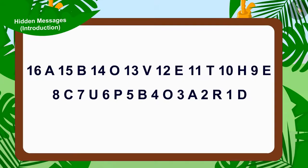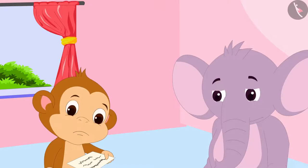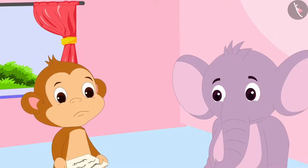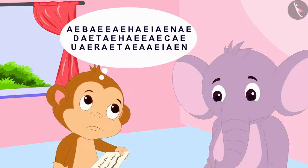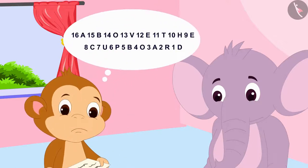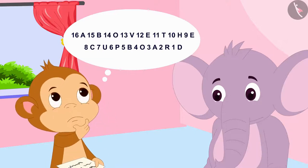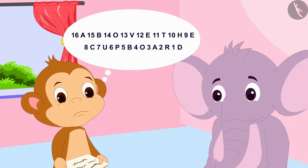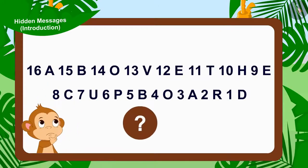And immediately found the second letter hidden behind the curtain of his house. This is written in Appu's next letter. Baban got shocked looking at the second letter. He began to think, 'In the first letter, there were only jumbled alphabets. But in this letter, there are numbers too. What hidden message could there be in this letter?' Children, can you help Baban? Can you see any hidden message in Appu's second letter?